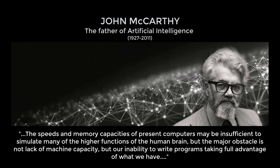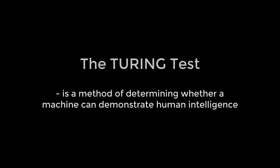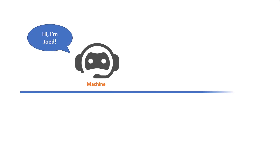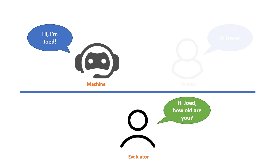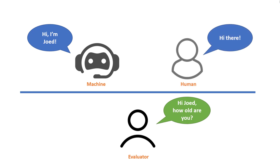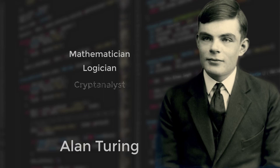However, despite his efforts, McCarthy did not achieve his true objective during his time: a machine that would pass the Turing test. The Turing test is a method of determining whether a machine can demonstrate human intelligence — if a machine can engage in a conversation with a human without being detected as a machine, it has demonstrated human intelligence. This concept was proposed in a 1950 paper by mathematician, logician, cryptanalyst, and computing pioneer Alan Turing, and it has become a fundamental motivator in the theory and development of artificial intelligence.